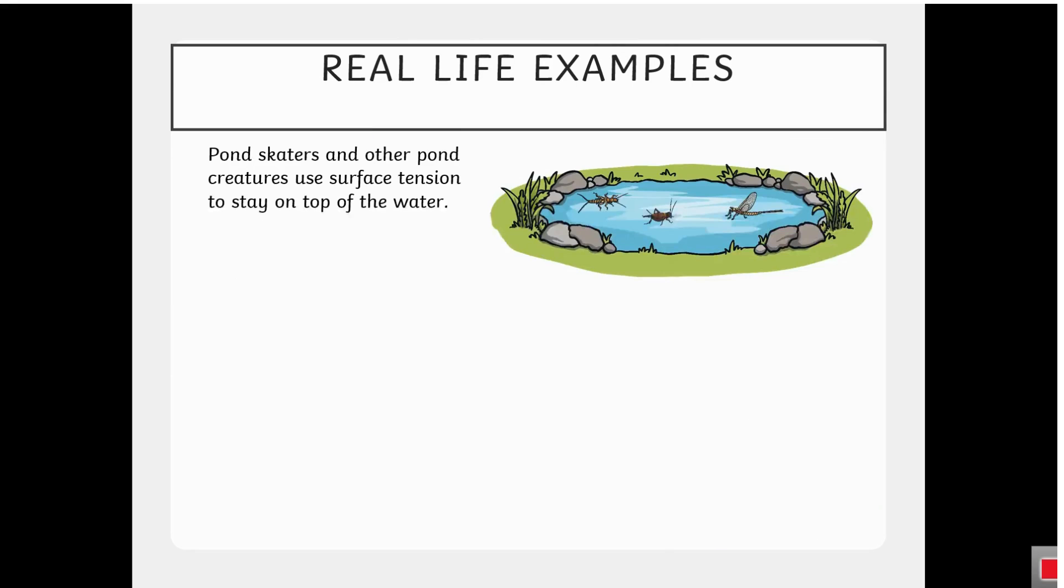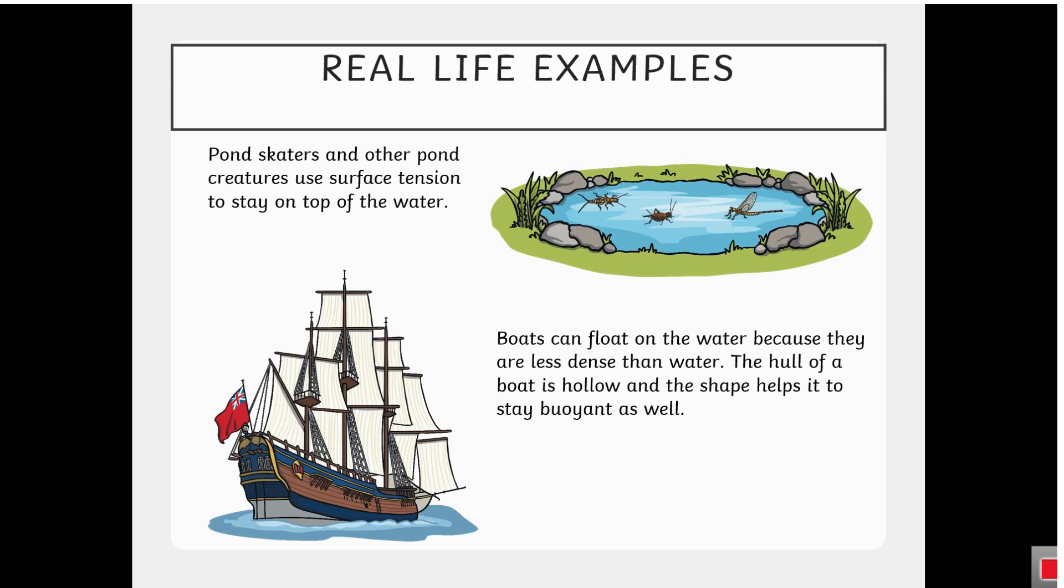Real-life examples. Pond skaters and other pond creatures use surface tension to stay on top of the water. Boats can float on the water because they are less dense than water. The hull of a boat is hollow, and the shape helps it to stay buoyant as well.